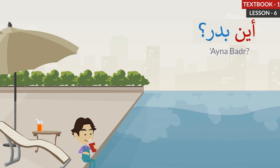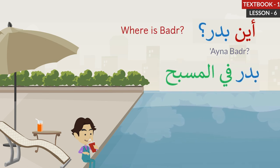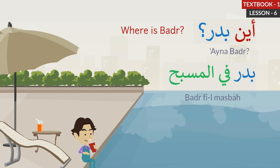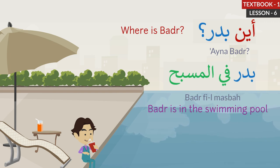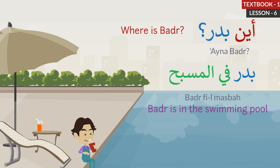The next one. Aina Badar? Where is Badar? Badar Philmasbah. Badar is in the swimming pool. Let's repeat: Aina Badar? Where is Badar? Badar Philmasbah. Badar is in the swimming pool.